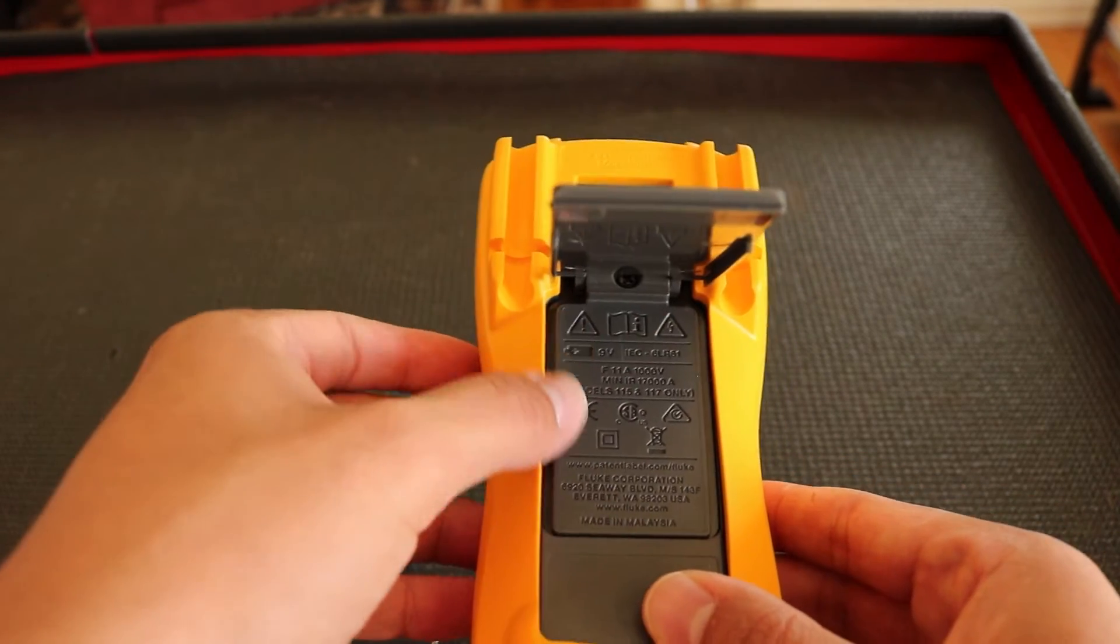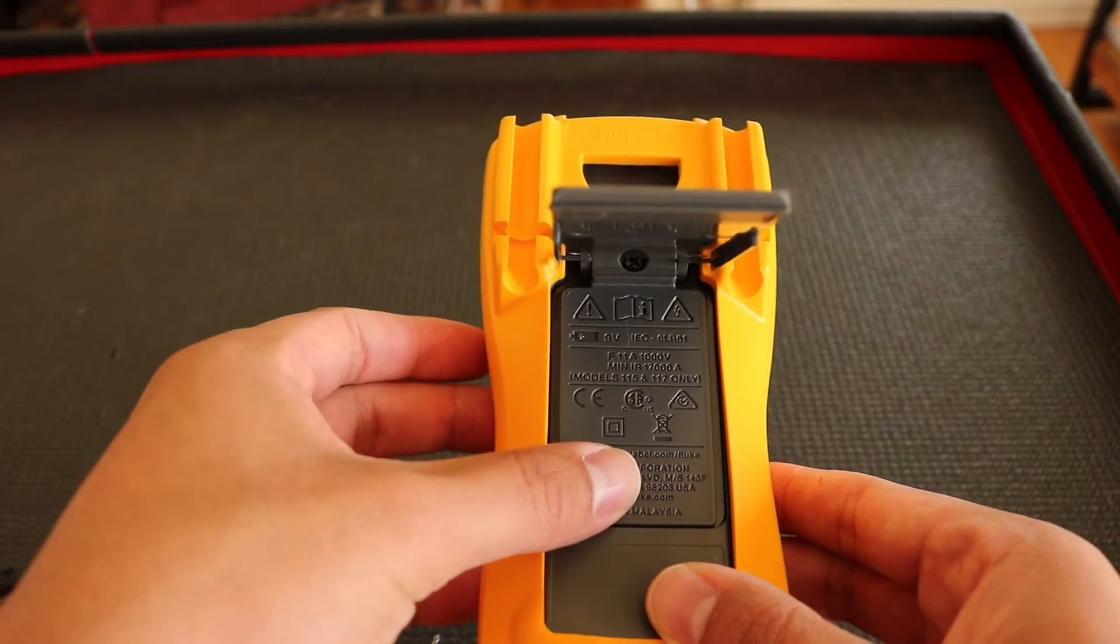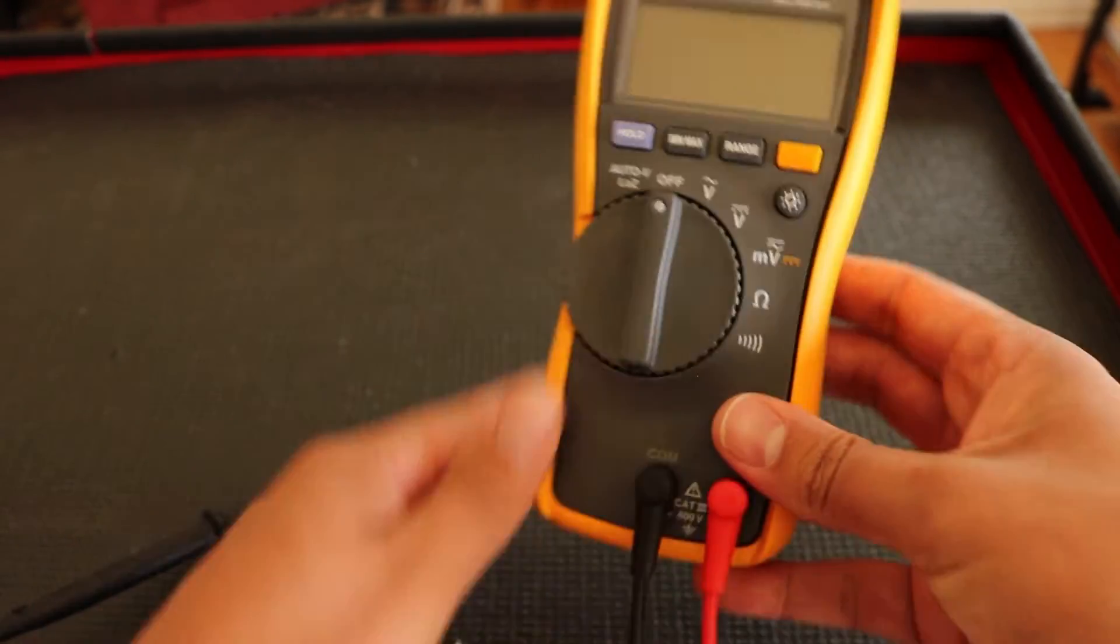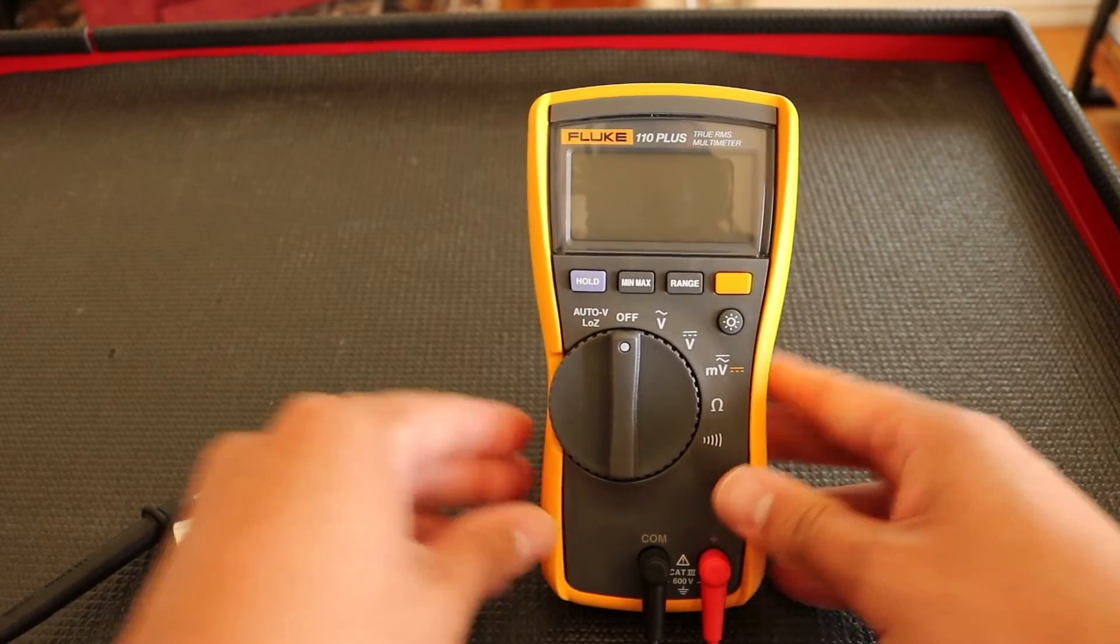And of course we have a collapsible stand for it. And underneath the collapsible stand, we have a port and that will be for the battery, so you can replace that. Let's go ahead and turn this over.